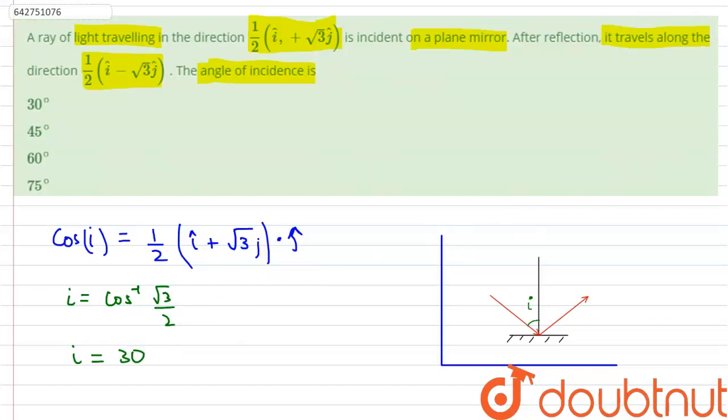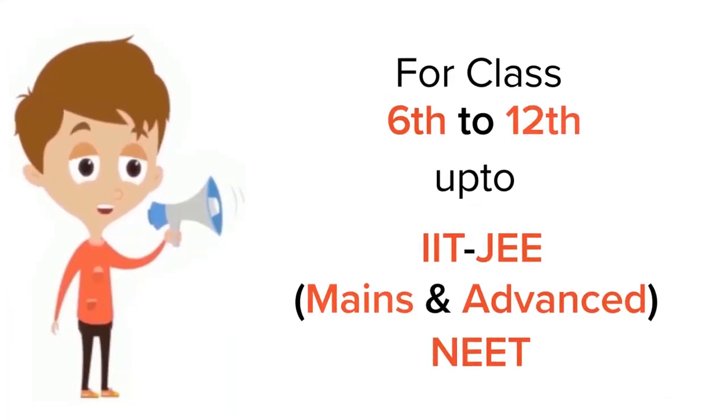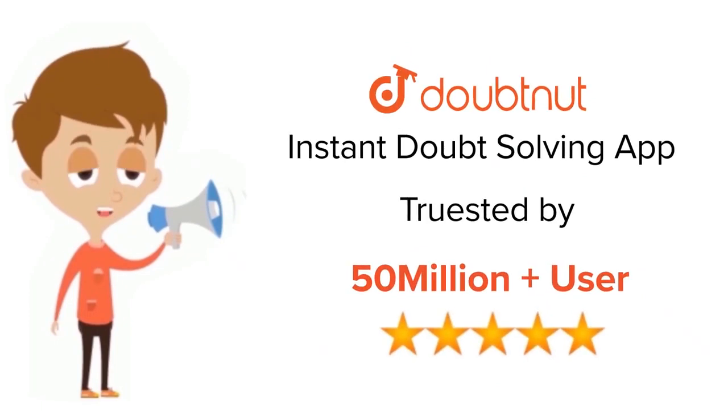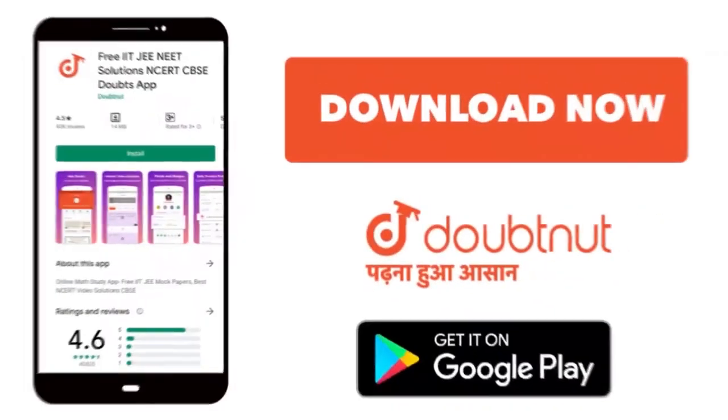Therefore, on calculation we can say that the angle of incidence equals 30 degrees. Thank you. For class 6 to 12, IIT-JEE and NEET level, trusted by more than 5 crore students, download Doubtnet app today.